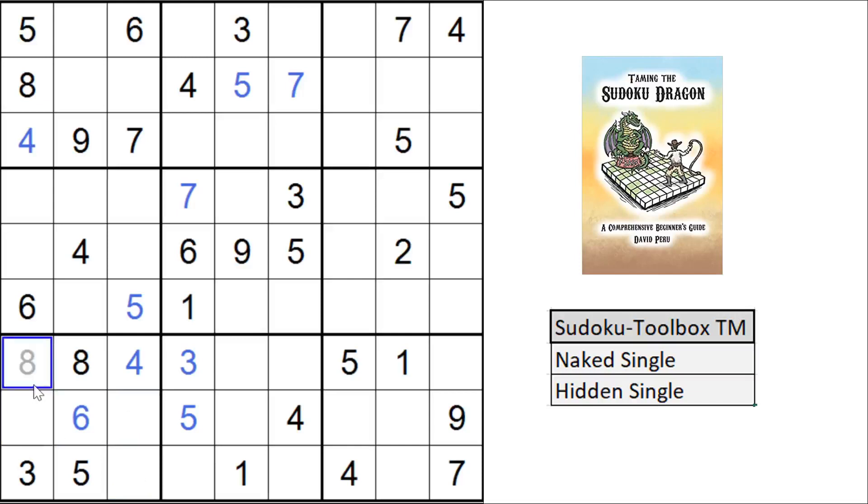We need a 2, a 9 here, a 1, a 2, a 7, a 9 there, a 2, a 7, a 9 there. So we can't solve anything in this particular block.